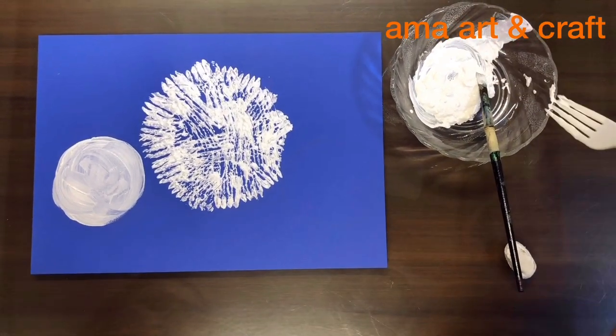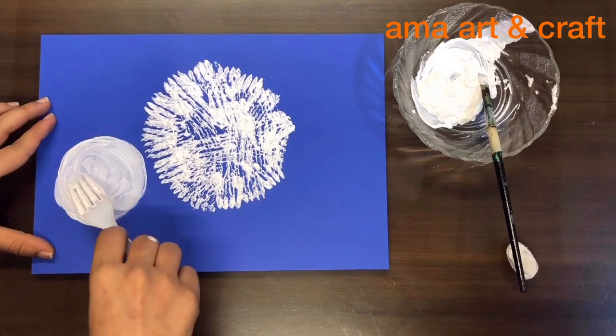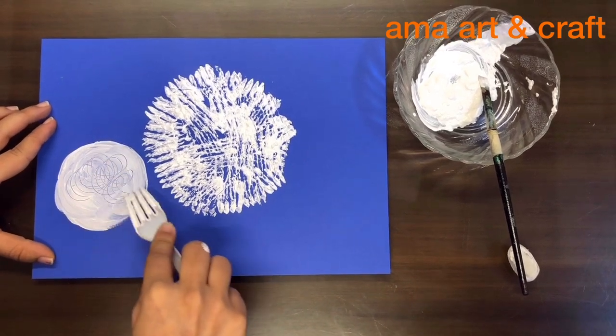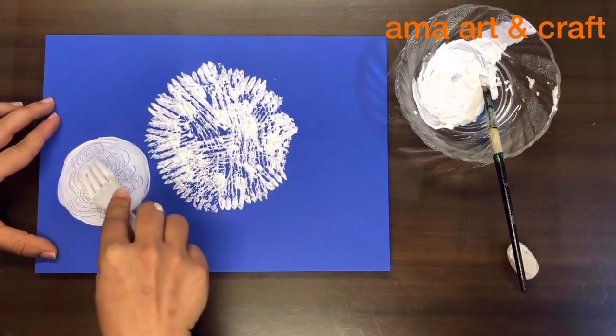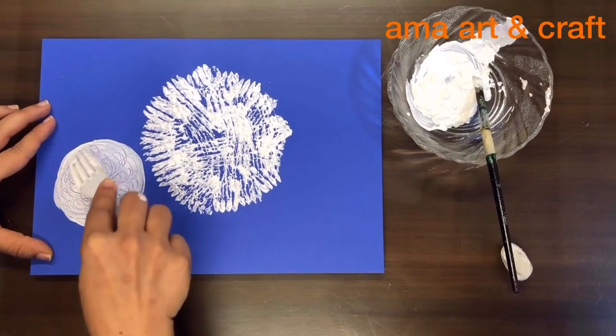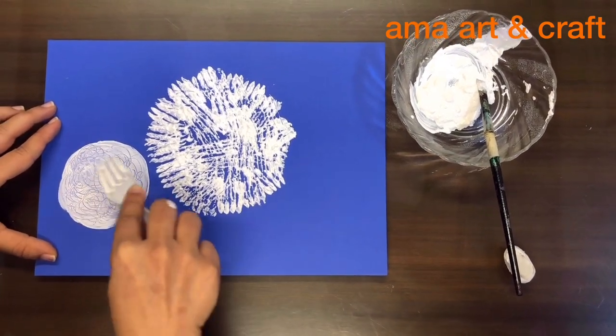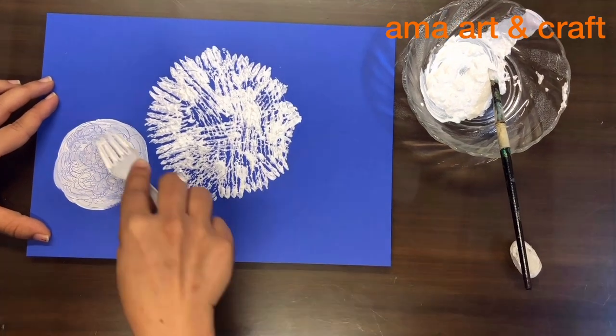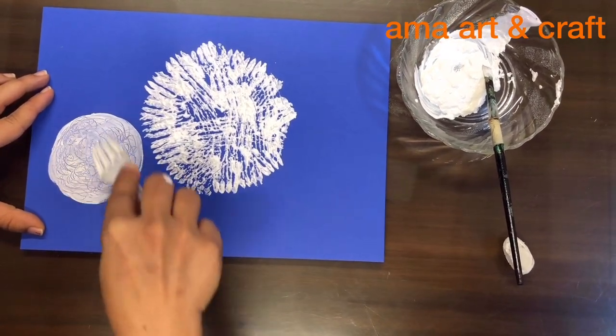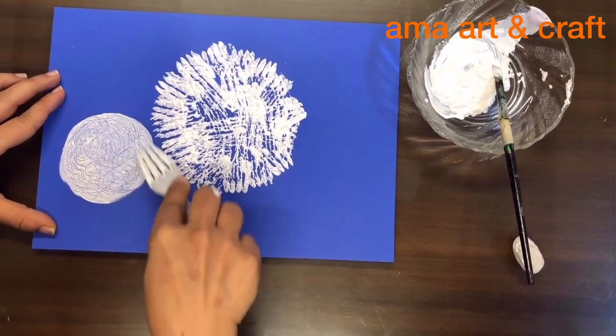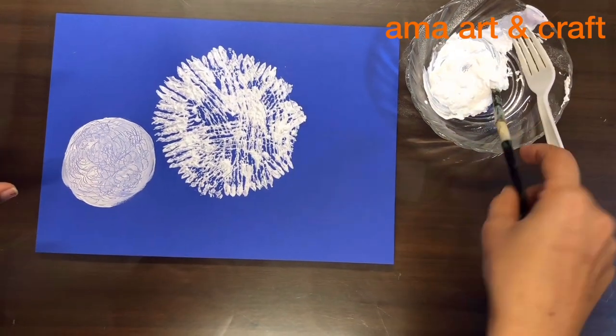And rub your fork like this. You have to rub your fork in color when the color is wet. Take it away.